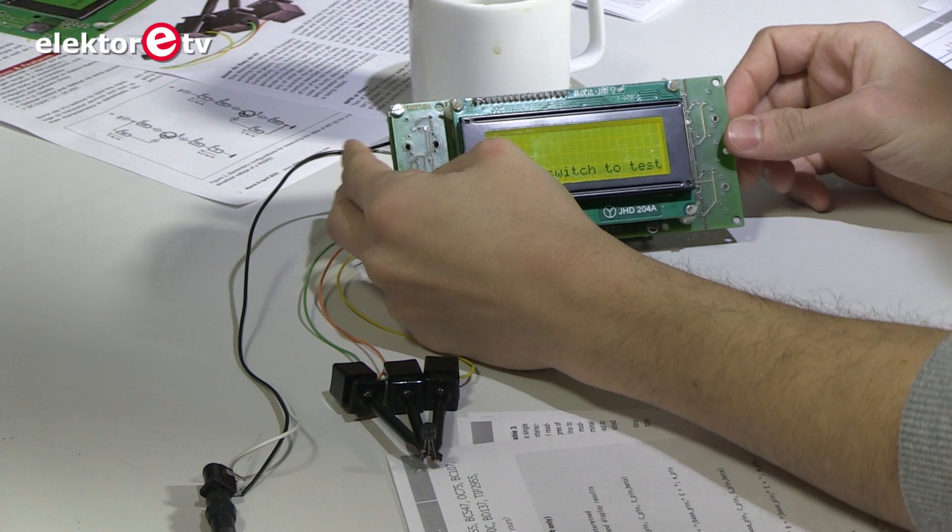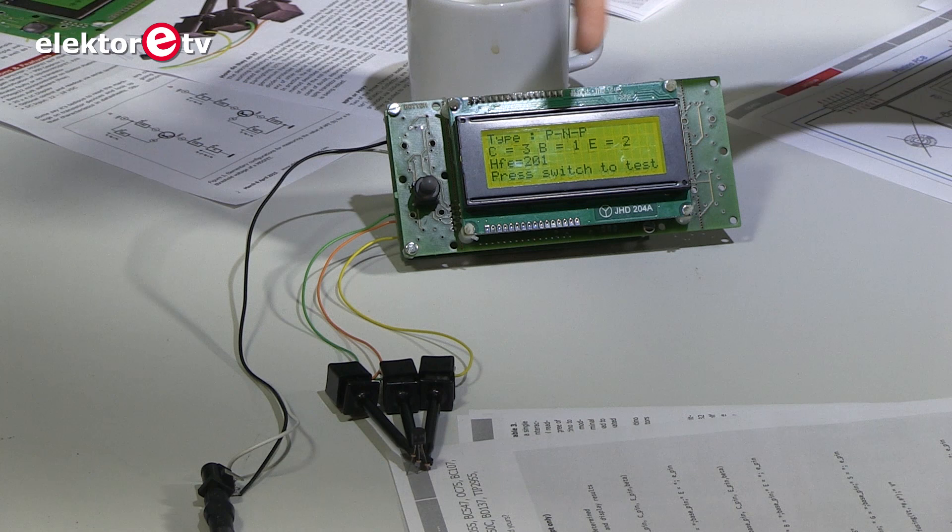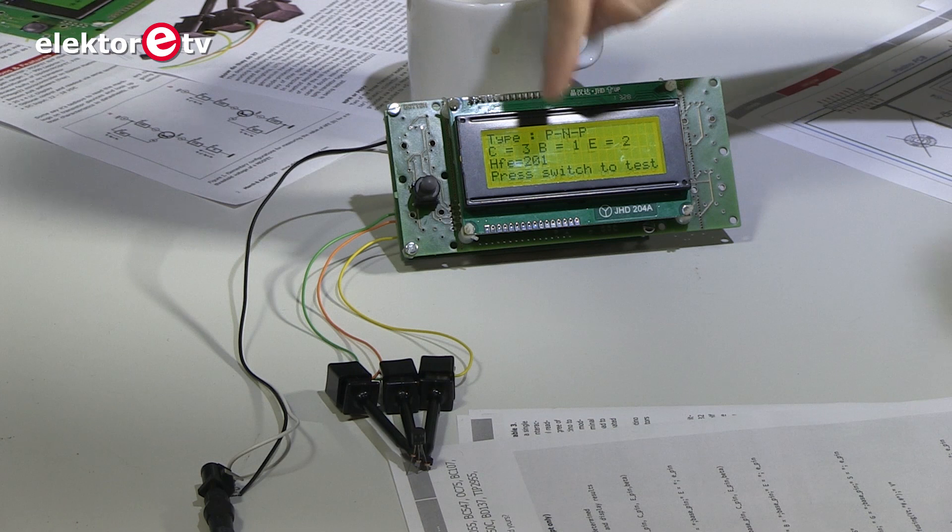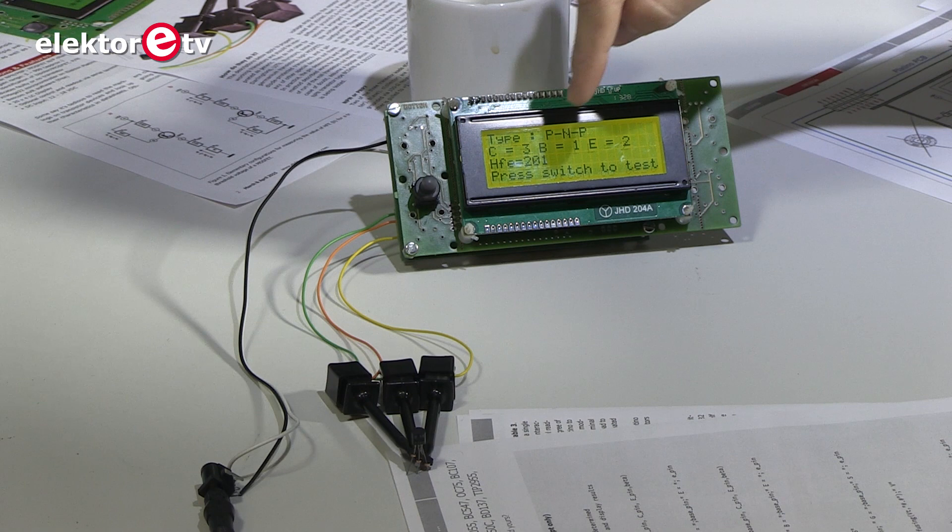In this case, we know that we have a PNP transistor and we know that test pin number three corresponds to the collector, number one is the base and number two is the emitter. And we also know the forward current gain, the beta, that in this case is 201.